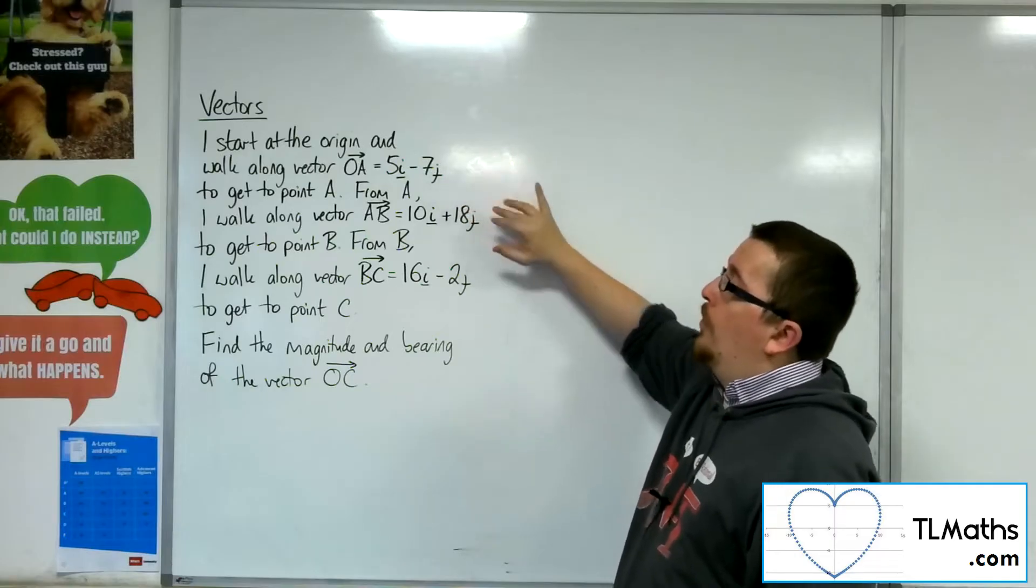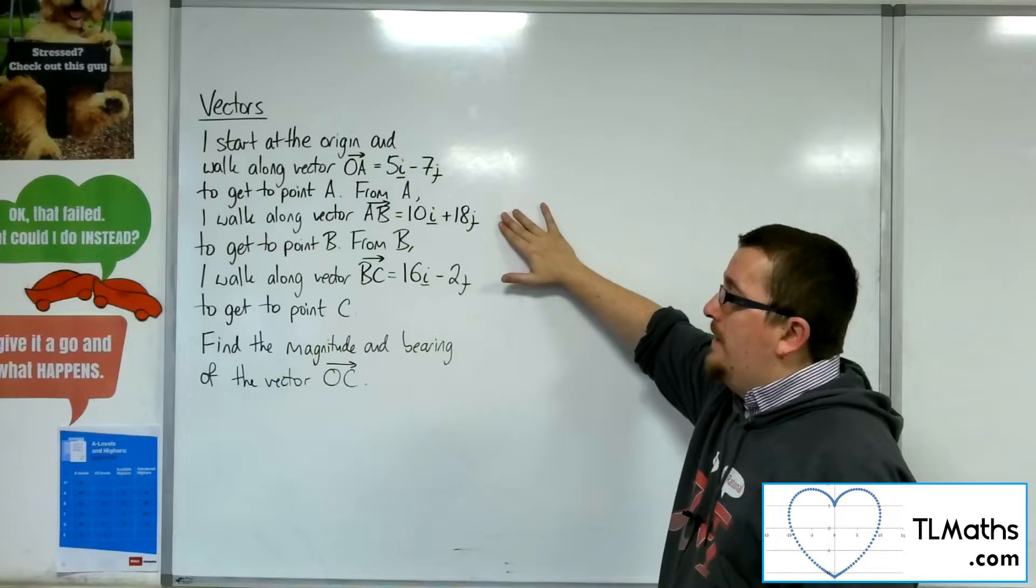From A, I walk along vector AB, which is 10i plus 18j, to get to point B.